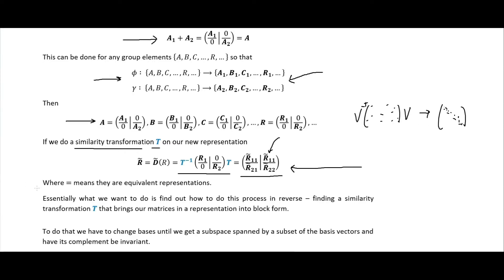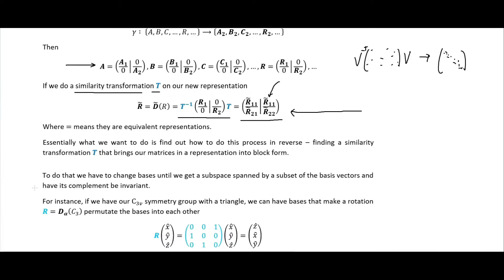To do that we have to change bases until we get a subspace spanned by a subset of the basis vectors and have its complement.